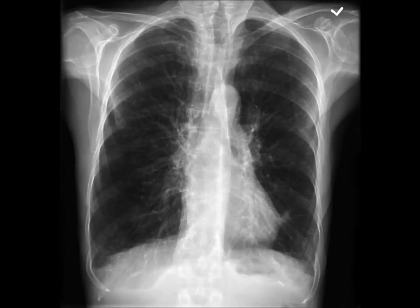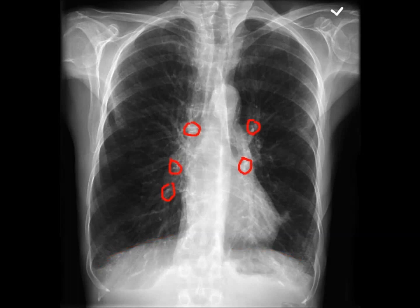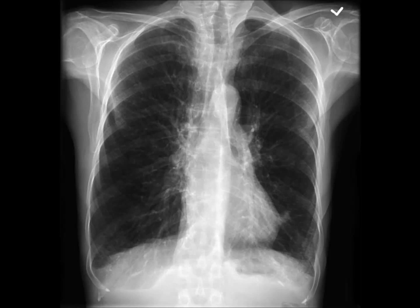Now onto the next example. The first thing to comment on is the technical quality — the patient may be rotated slightly, and it's hard to see the intervertebral spaces through the heart, suggesting underpenetration. The most striking thing is that the lungs are overinflated, with the eighth anterior rib intersecting the diaphragm at the mid-clavicular line. Going through our system shows flattened hemidiaphragms on both sides with blunted costophrenic angles. There are also some small areas of increased opacity in the hila. The hyperinflated lungs and flattened diaphragm are characteristic of COPD. The blunted costophrenic angles are a result of the flattened diaphragm, and the hilar opacity is likely due to calcification of pulmonary blood vessels — suggesting this patient was a heavy smoker.